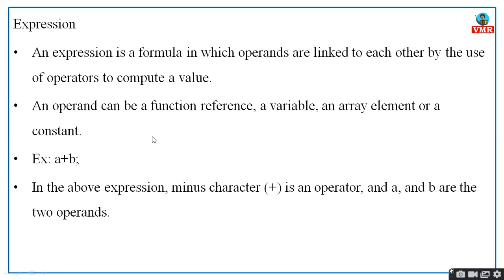An operand can be a function reference, a variable, an array element, or a constant. So whatever the operand is, you can take a plus b, you can consider array values, function names, anything. In the expression a plus b, the plus is an operator and a and b are the operands. All your plus, minus, multiplication — those all become your operators, and the values and variable names are nothing but your operands.